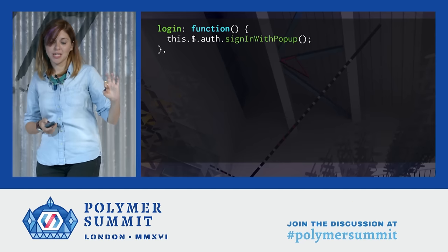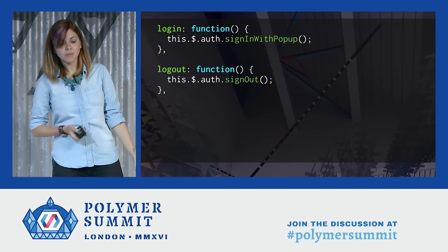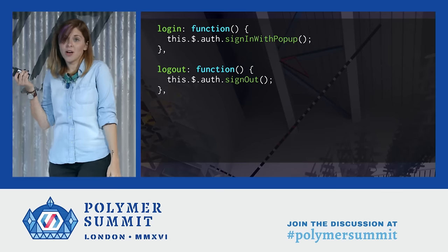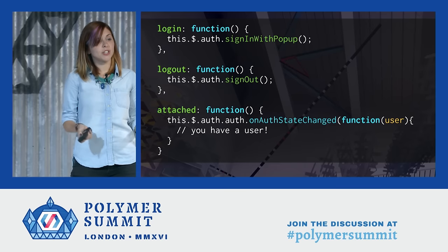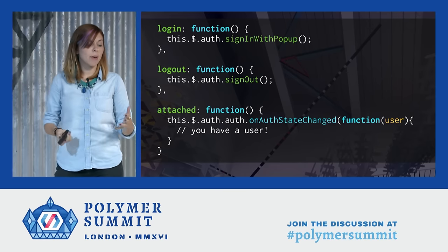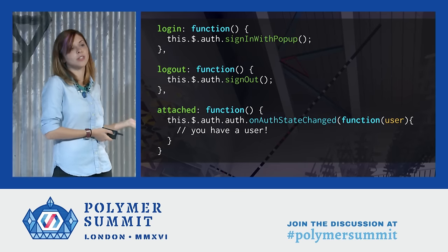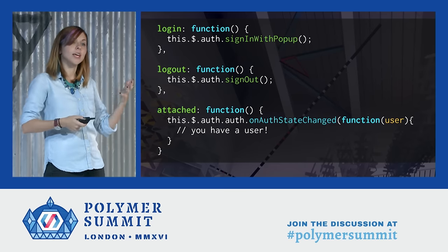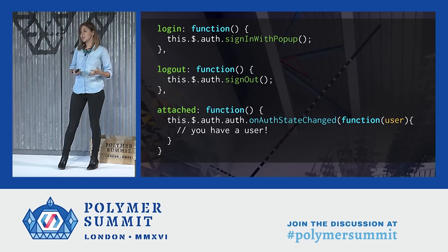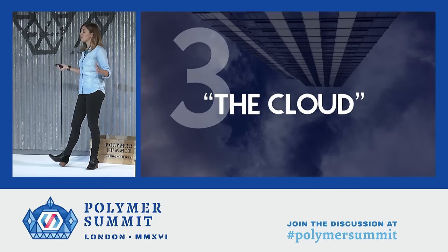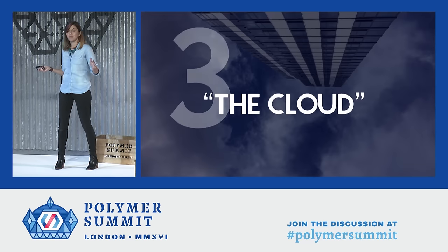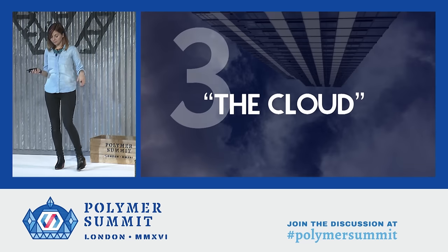With one line you can actually authenticate — I'm choosing Google as my authentication provider. When authentication completes, I get this user property. I can bind the avatar or name somewhere in my app. If I got an entire app with one line in Polymer, I get authentication with one line in Firebase. That is A-plus for lazy. This is how you log out, and every time you change state you get a callback. Problem solved.